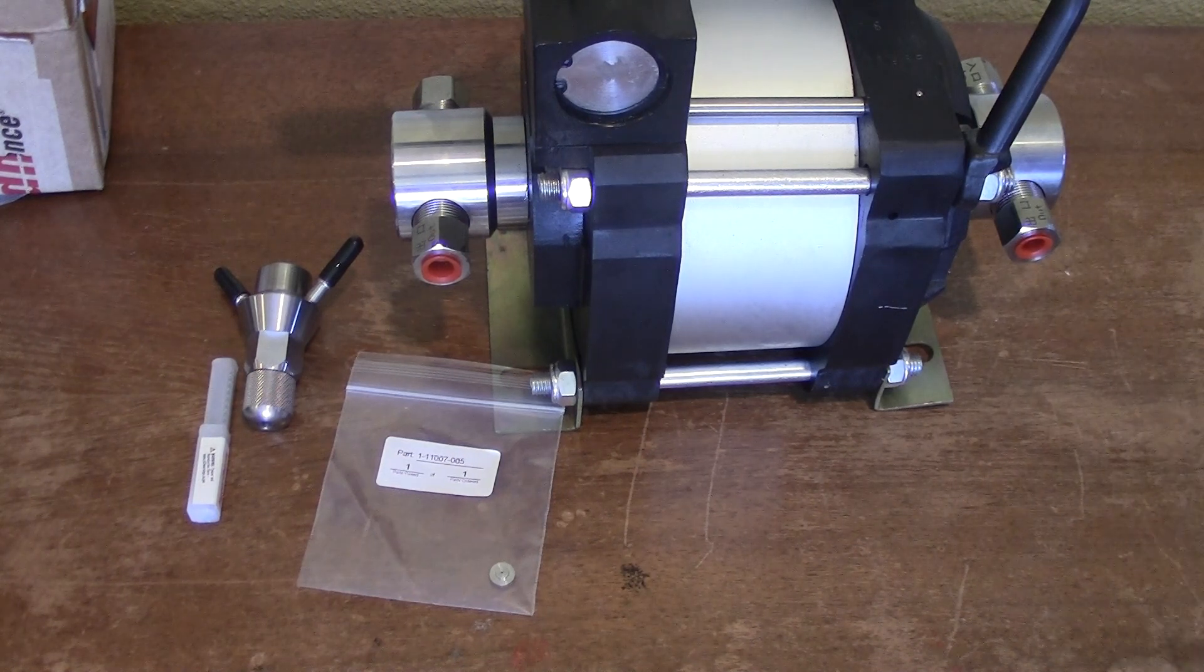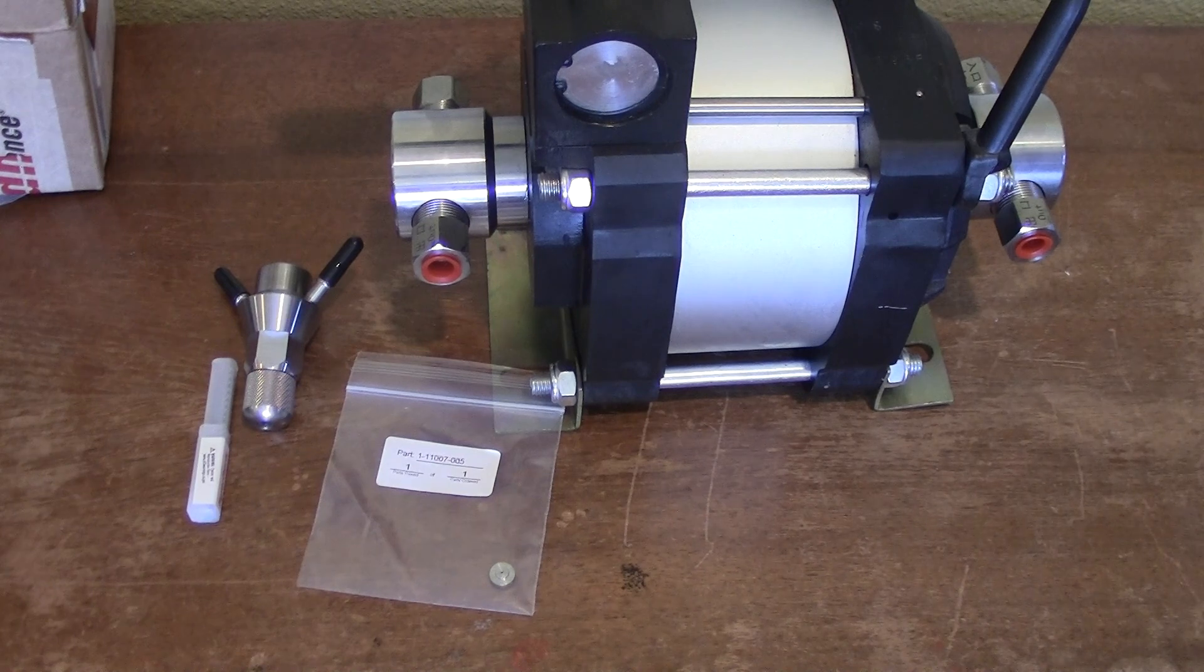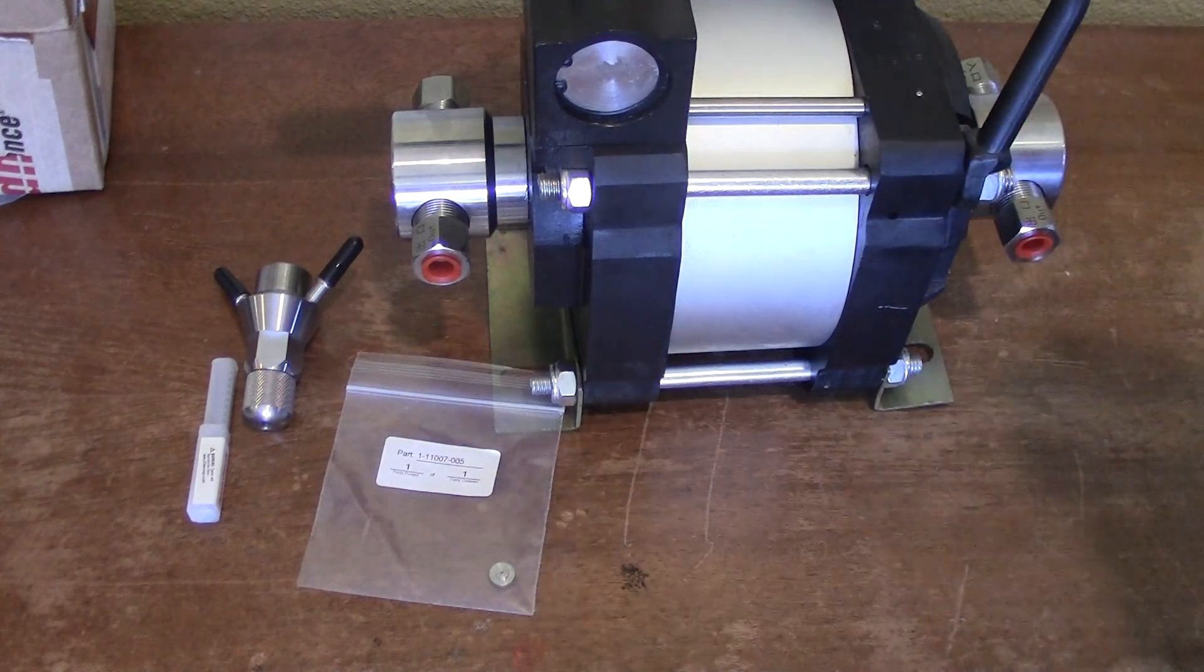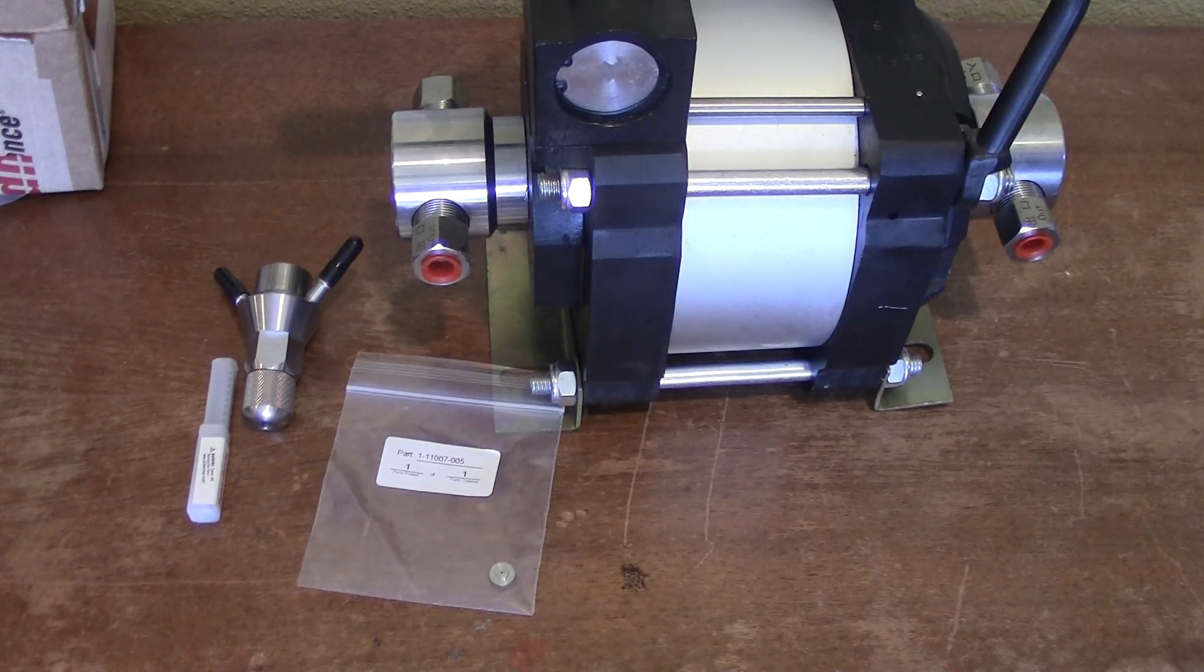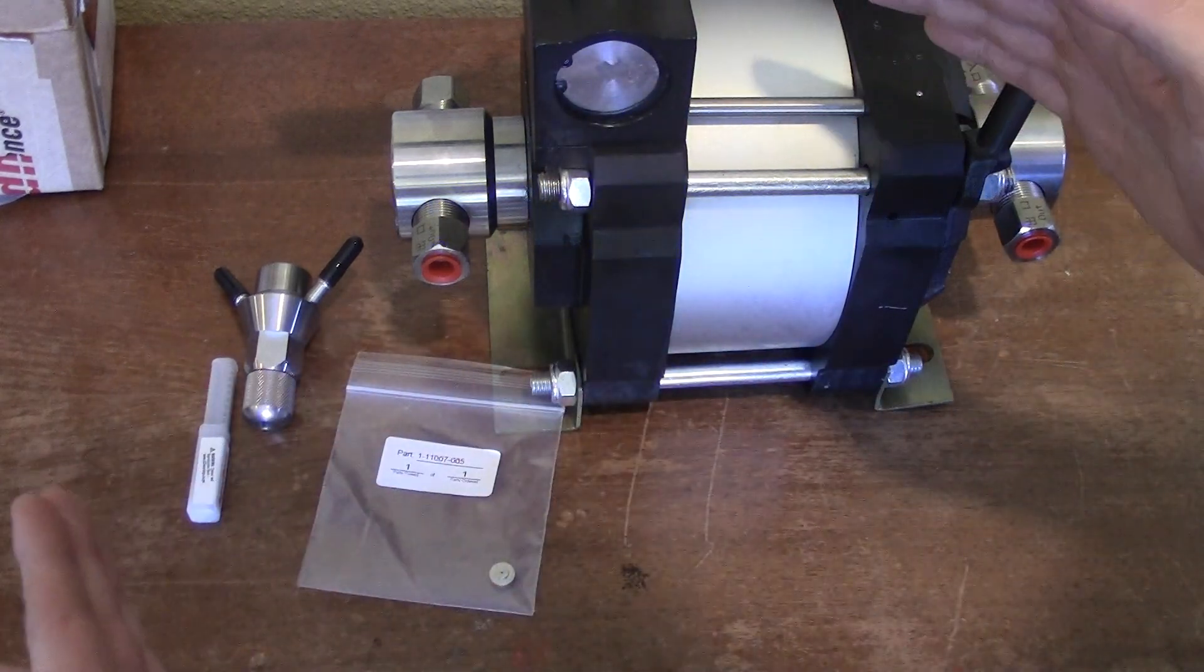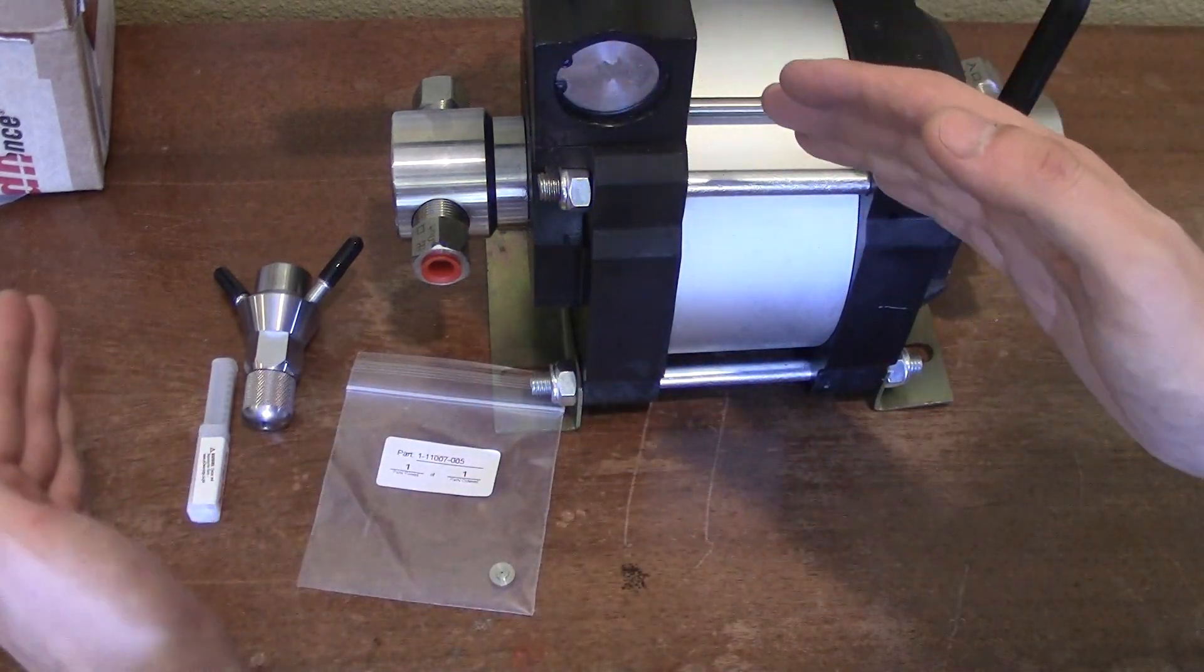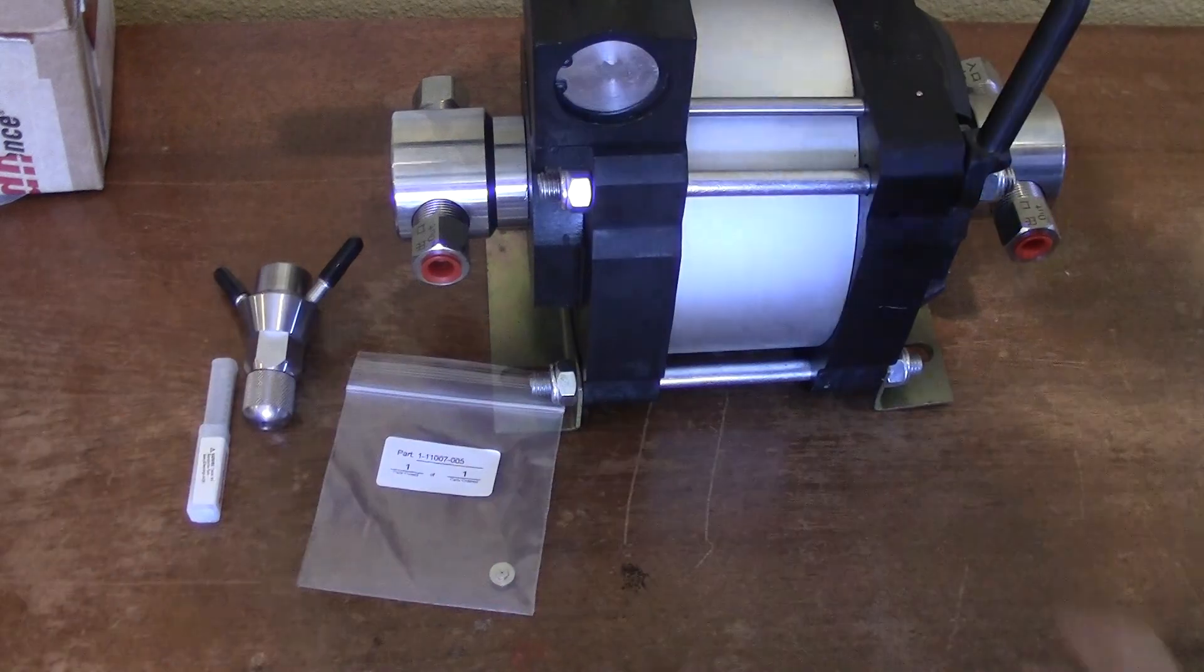Because these hoses are flexible, quote unquote, but not that flexible. They have like a three to five inch minimum bend radius. So that means if you bent it as hard as you can, it would make a ten inch diameter circle, which is pretty big.